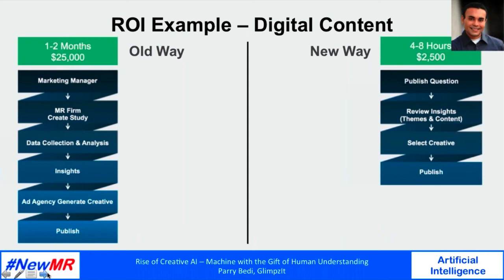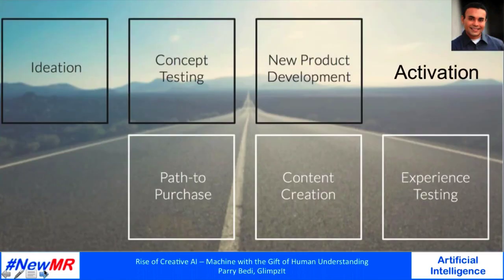The most compelling part of AI applications like these is obviously the ROI. Taking the example of digital content creation, you can see all the steps involved in both the old and new ways of doing things. The new way is much simpler, faster — hours versus weeks — cheaper, costing almost 90% less — and better in many ways, because the machine does the hard work of sifting through millions of possibilities.